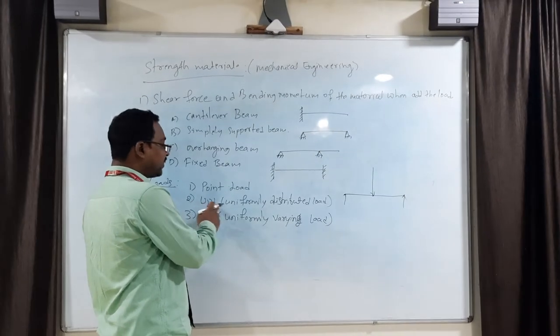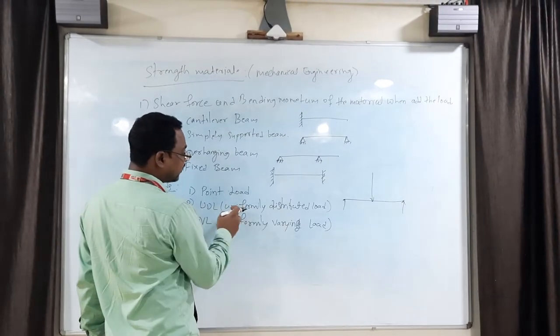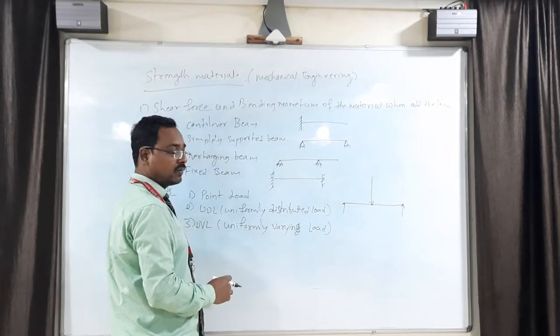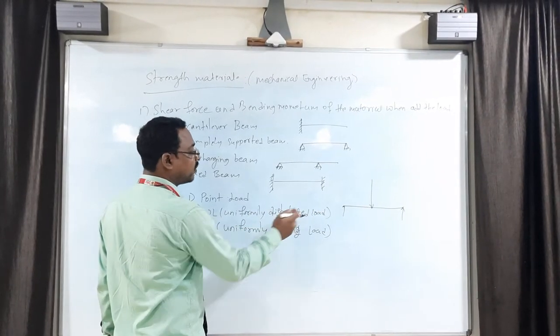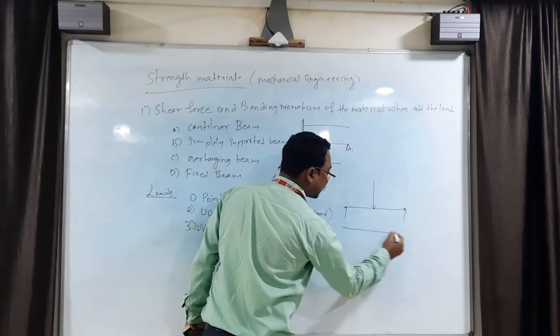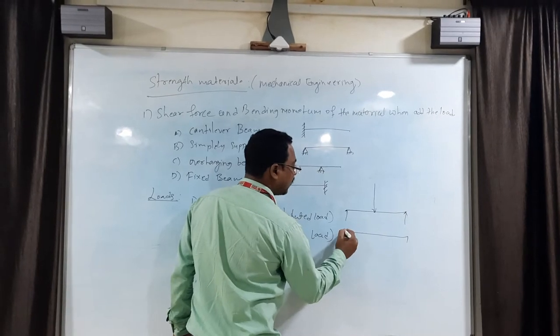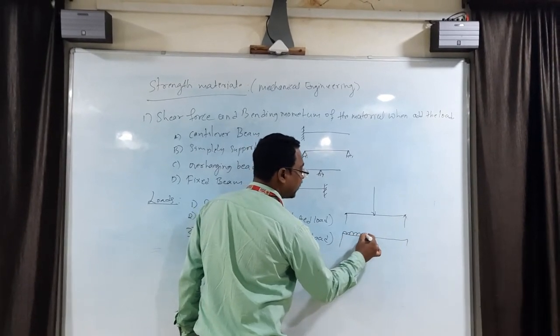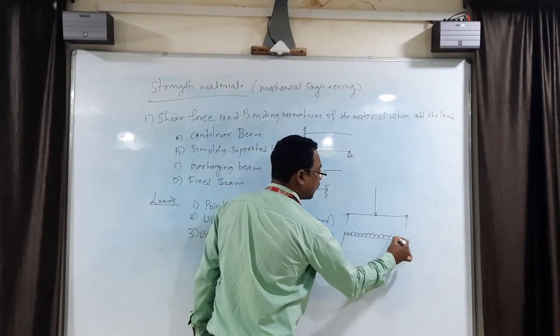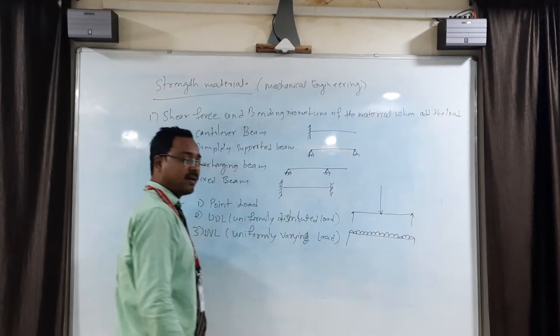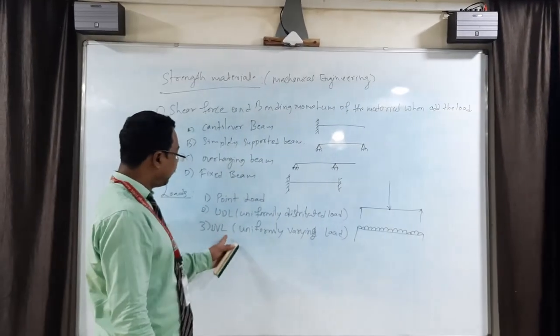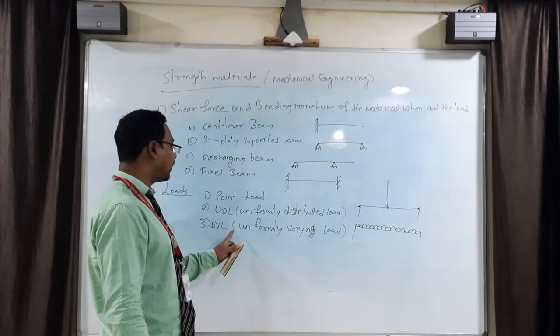Second one is UDL. As the name indicates, Uniformly Distributed Load. In entire span of the length, load is uniformly distributed or equally distributed over the span of beam. If such a covered one, you can see that UVL, uniformly varying.